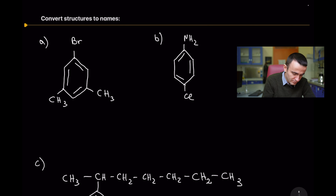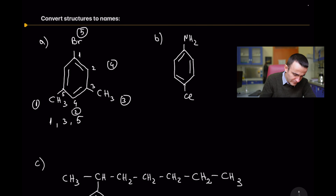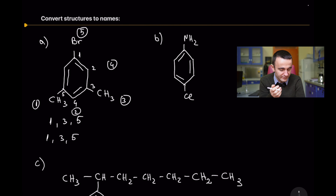Now let's go from structure to name. The general rule is to keep the substituent numbers as low as possible and name them in alphabetical order. In example A, counting one way gives positions 1, 3, and 5; counting the other way also gives 1, 3, and 5. When both ways give the same numbers, you apply the alphabetical order rule.